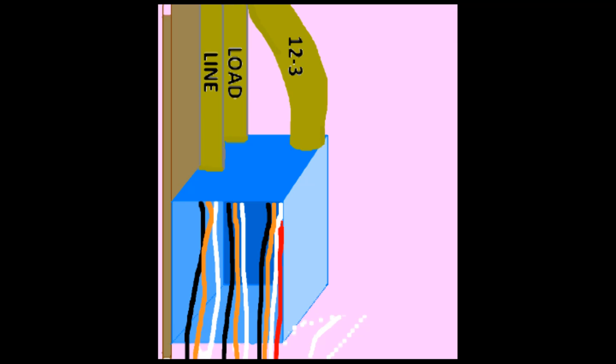You see that the main box has one 12-3 and two 12-2s running into it. One of the 12-2s is the feed or line and the other 12-2 is the light leg or load.